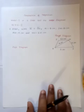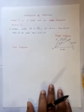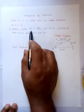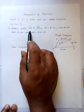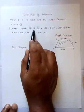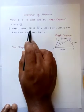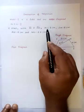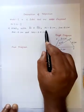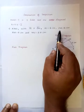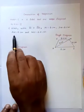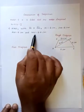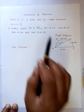First question: line segment AI is parallel to line segment SM. The given measurements are: AI is equal to 6 cm, IM is equal to 5 cm, AM is equal to 9 cm, and MS is equal to 6.5 cm.